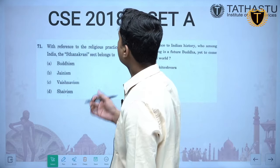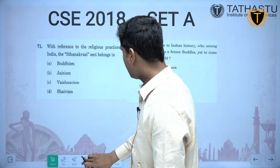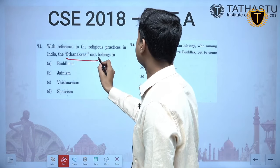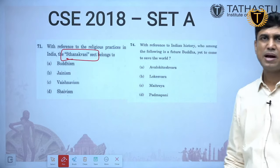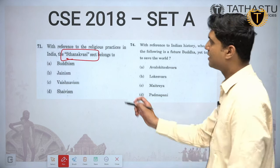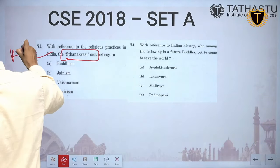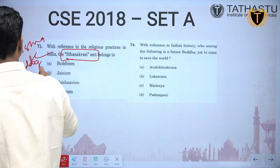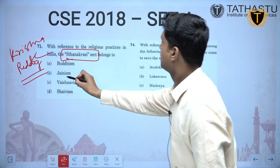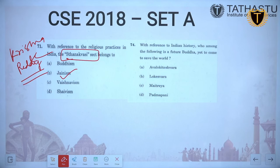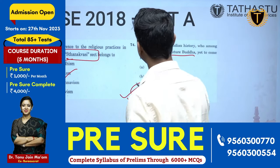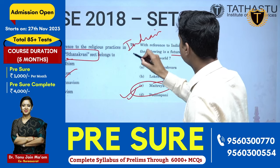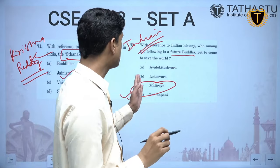From 2018: with reference to religious practices in India, the Sthanakvasi sect belongs to Jainism, not Buddhism — again a question from the Buddhism and Jainism theme. This is not given in routine books but can be found in Krishna Reddy's book. Another question: who among the following is the Future Buddha? The Future Buddha is Maitreya, mentioned in the Class 11 Indian Art NCERT. So that can be solved from NCERT itself.